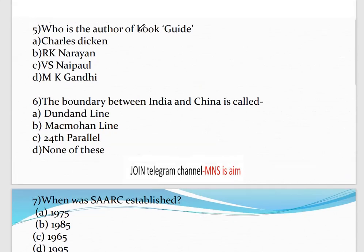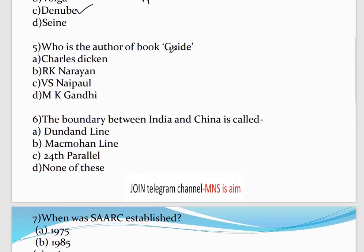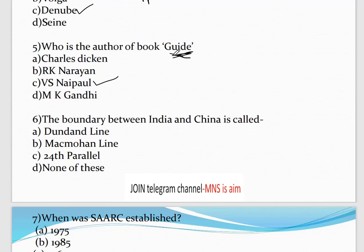Question number 5: Who is the author of the book 'The Guide'? Options are Charles Dickens, R.K. Narayan, V.S. Naipaul, and M.K. Gandhi. The correct answer is option C — R.K. Narayan. 'The Guide' was mentioned in the last video, along with 'A Bend in the River.'